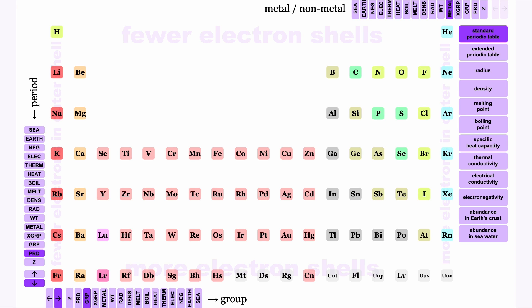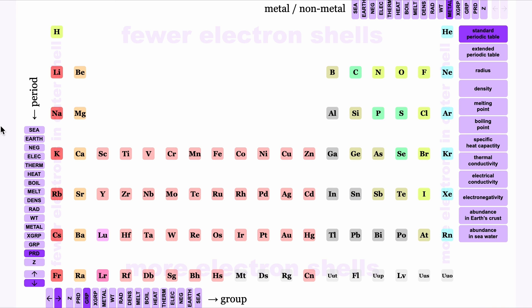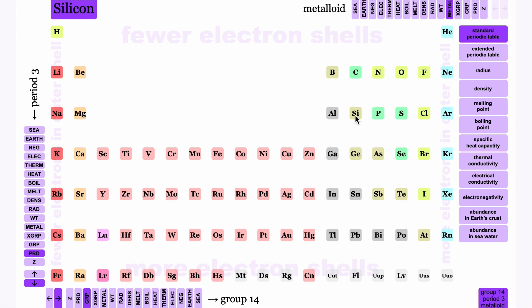Elements with fewer electron shells are at the top. Hydrogen atoms have only one electron shell, lithium atoms have two, sodium atoms have three, and so on down to francium atoms with seven electron shells. Elements with fewer electrons in their outer shell are shown on the left. Sodium has only one electron in its outer shell, silicon atoms have four electrons in their outer shell, and argon atoms have eight.